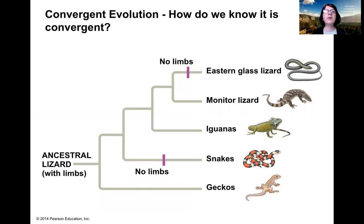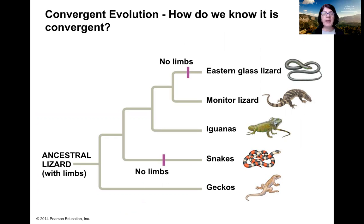Remember convergent evolution — we talked about it with analogous structures. Convergent evolution is when organisms that are not related have developed similar adaptations because they live in similar environments. This particular adaptation of having no limbs was developed by snakes and a few species of lizards independently.